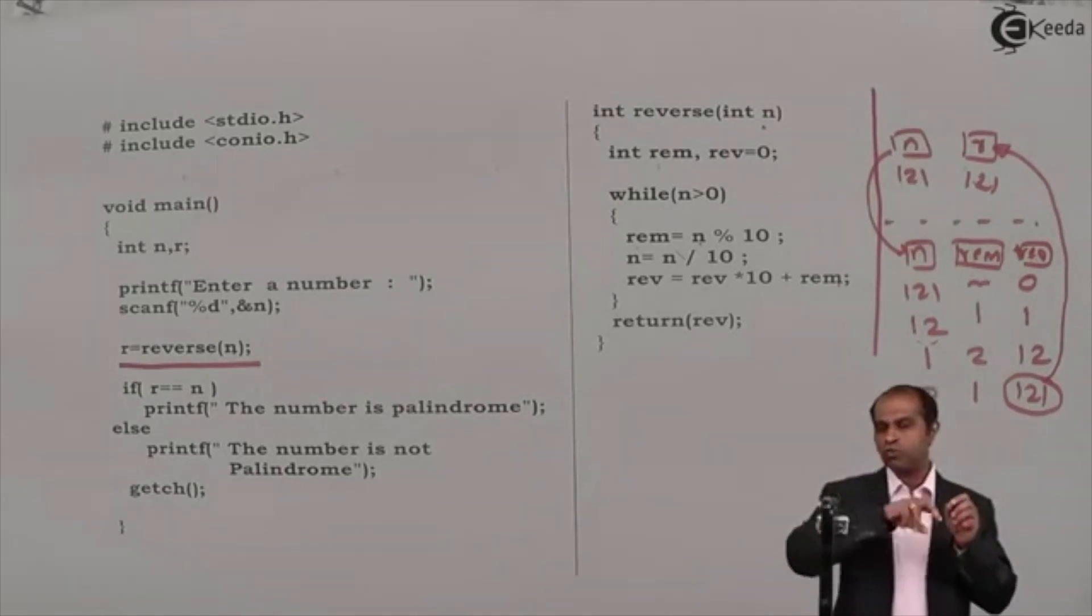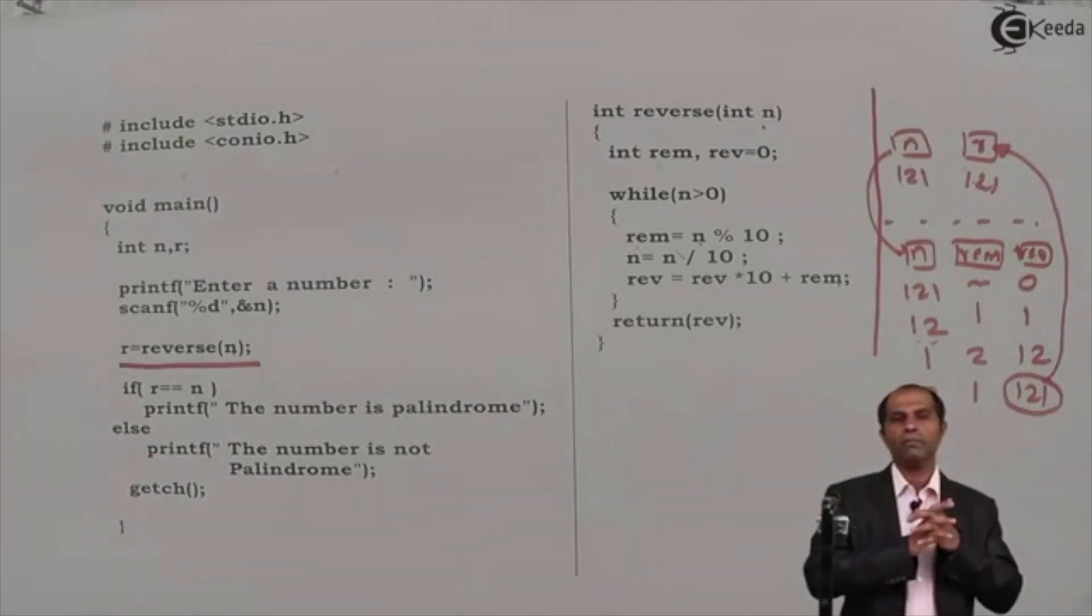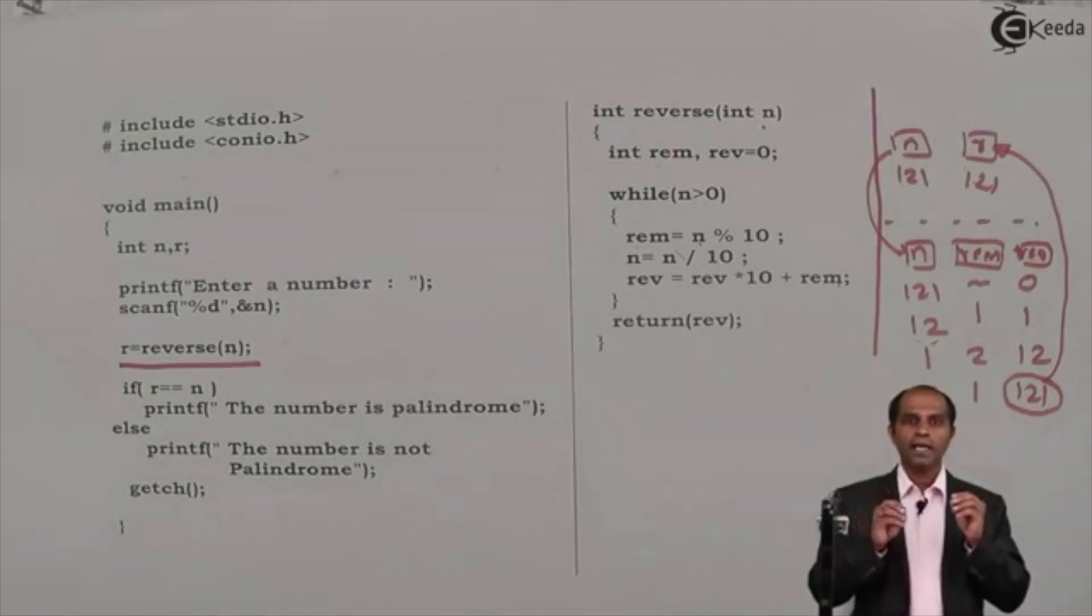But here we will not copy the value because the variable which is going to be modified is in a function and the variable which exists in main is altogether separate variable. So when main goes to function, the function variable might get modified, it will not affect the value of main. Hence we conclude that this program can directly use the variables which have been accepted from the user for the comparison without making a copy of that using these functions. Thank you.